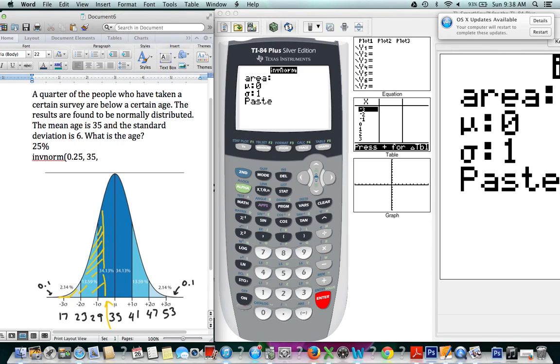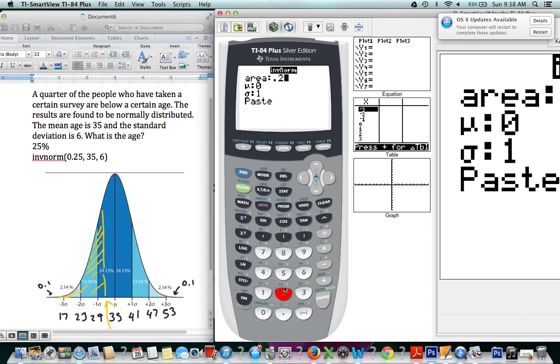And finally our last value that will be entered is our standard deviation, which in this case is 6. So the numbers entered here are the area which is 0.25, the mean again which is 35, and the standard deviation which is 6.